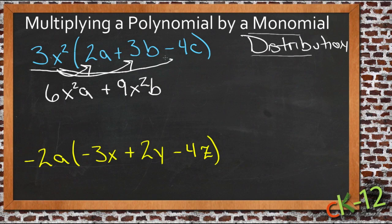And now finally we move on to the last one. Now we have 3 times negative 4, that's negative 12. And x squared times c, just x squared c.